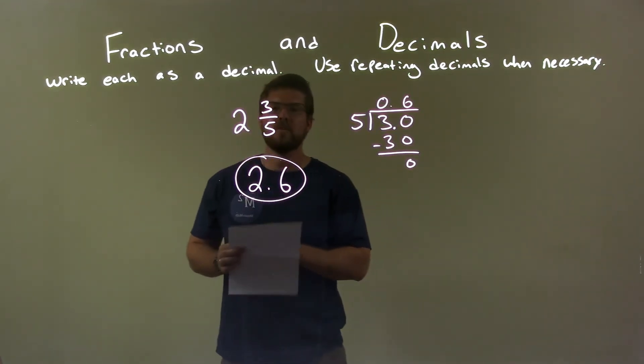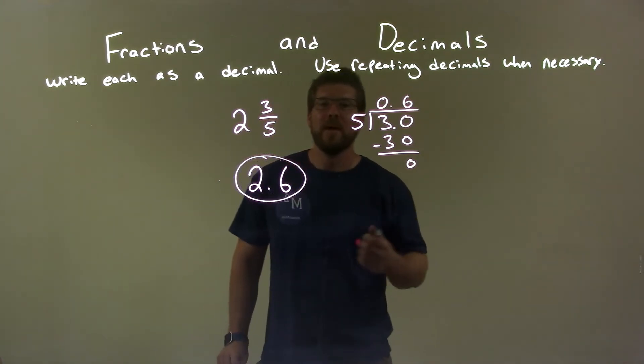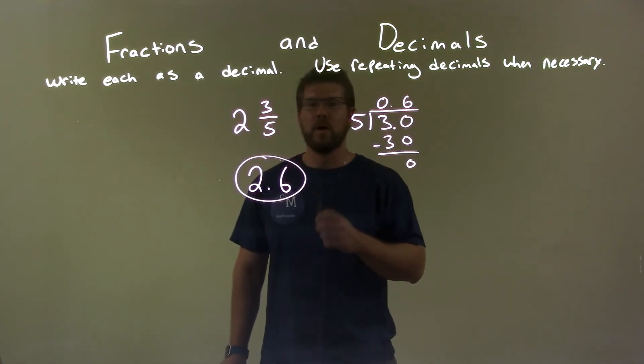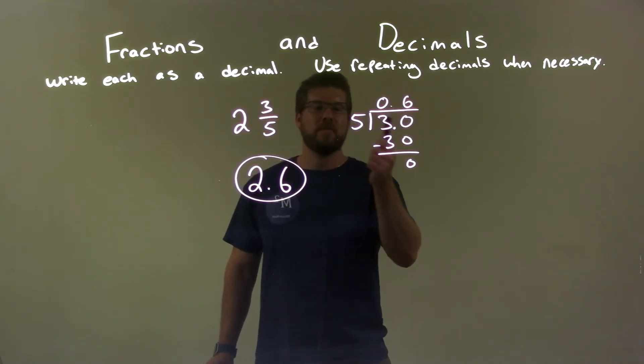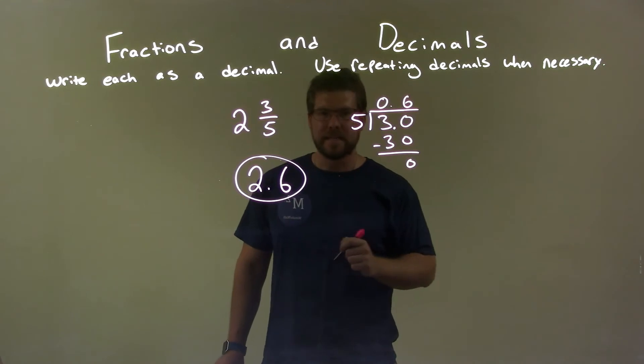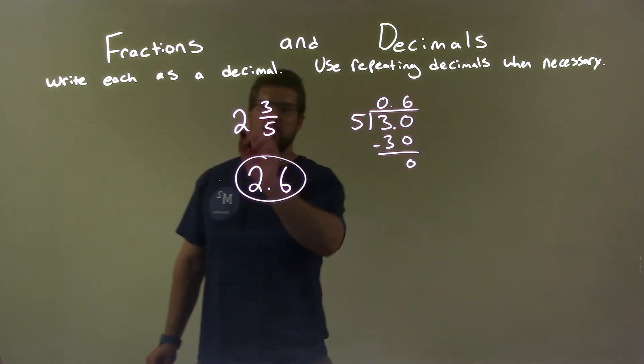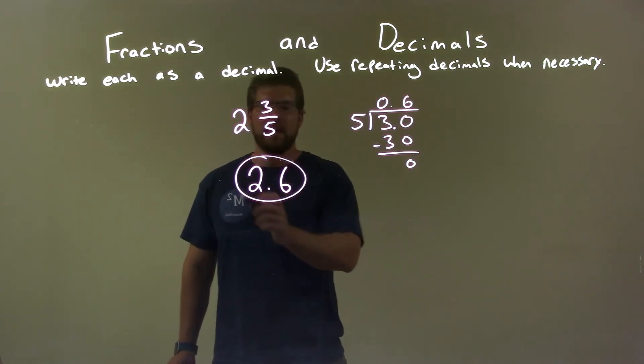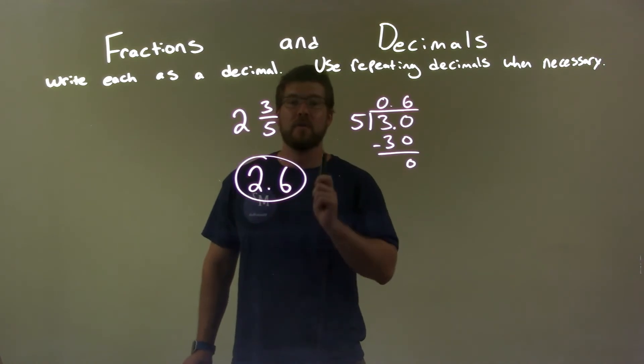So quick recap, we're given 2 and 3 fifths and we had to write this as a decimal. Well, I took the 3 fifths in long division, 5 into 3. That long division gave me 0.6. I added that 0.6 with the 2 that's out front and together we have 2.6 as our final answer.